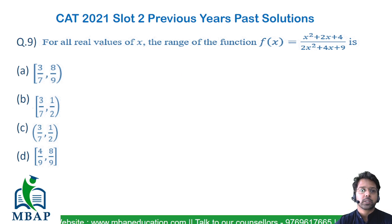Now let's have a look at the next question which came in CAT 2021 Slot 2. The question says for all real values of x, the range of the function f(x) = (x² + 2x + 4)/(2x² + 4x + 9), and we have to find the range of this function.